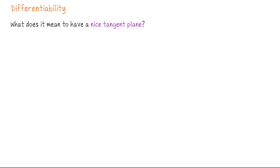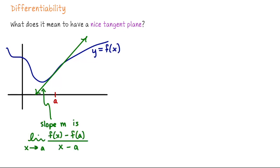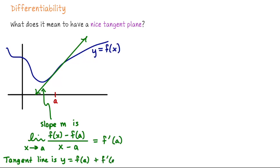I may have given you a working definition, like a function is differentiable when it has a nice tangent plane. Let me now explain what I mean by that concept. In single variable calculus, a function is differentiable at a point A in its domain if it has a tangent slope — when we take the limit of a difference quotient, it exists and equals a number that we say is the slope of the line tangent to the graph y equals f of x at that point. So differentiability goes hand in hand with having a tangent line. The equation of the tangent line is y equals f of a plus f prime of a times x minus a.